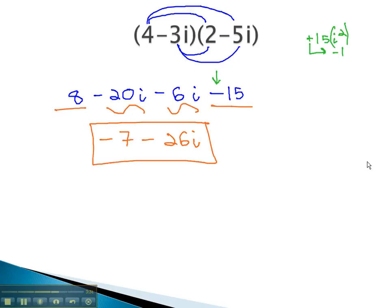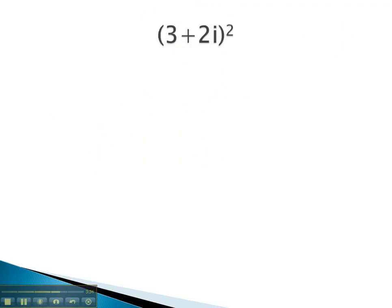Let's take a look at one more problem where we multiply using i. In this problem, we're squaring a binomial. Recall, this has three parts to the final answer. First, we square the first term. 3 squared is 9. Then we multiply them together twice. 3 times 2i is 6i, and another 6i is positive 12i.